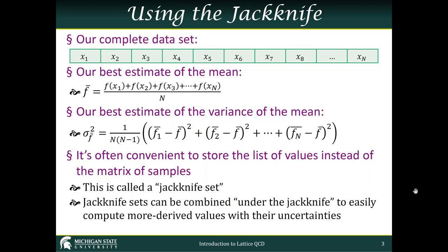That means we can now estimate the variance of the mean using the ordinary variance formula — I'll print it up here in case you've forgotten. It's often convenient to store the list of jackknife values rather than the entire matrix of samples. There are n times n minus 1 different samples in the full jackknife matrix, but only n values in this list. If we've done that, we have what we call a jackknife set, and you can combine jackknife sets under the jackknife in order to easily compute more derived values with their uncertainties.